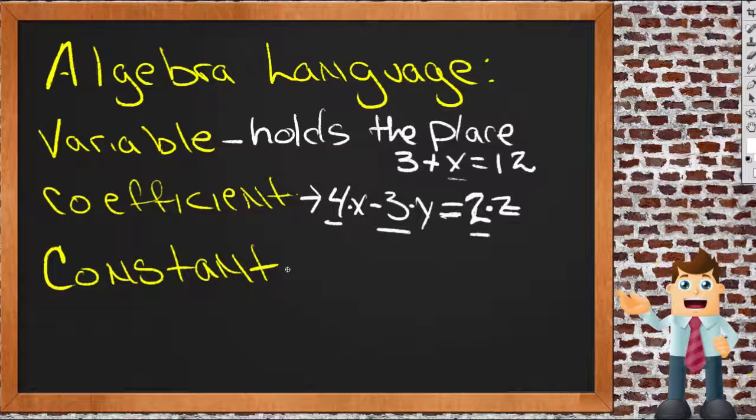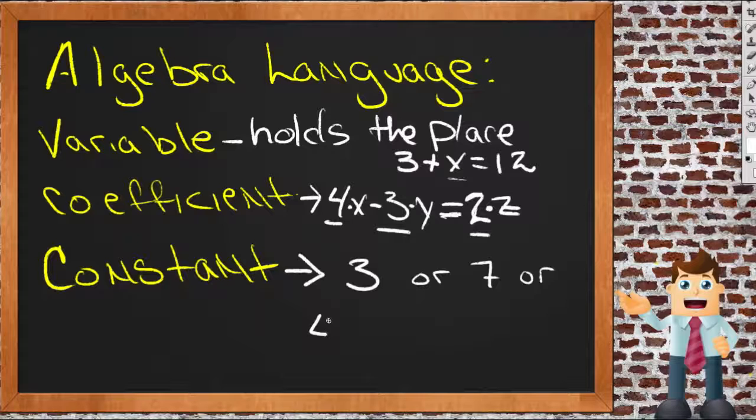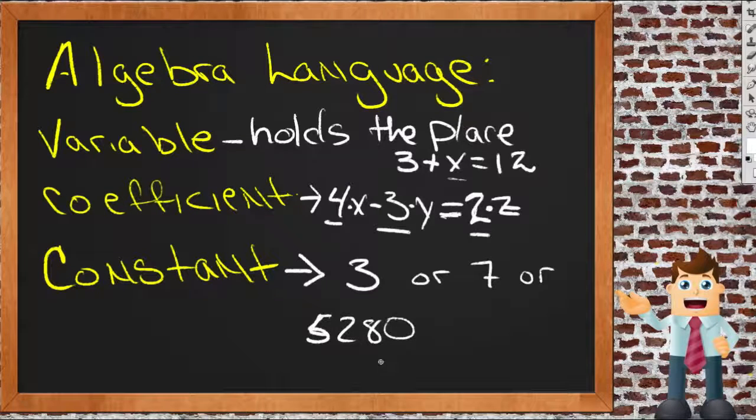Now a constant, a constant is a number that doesn't have a variable associated with it. For instance, 3, or 7, or 5,280. Those are all constants.